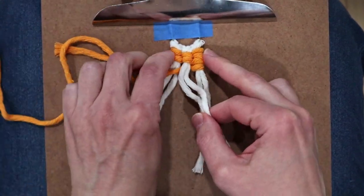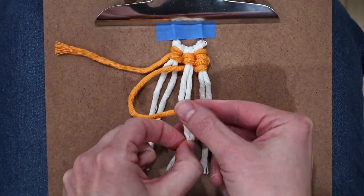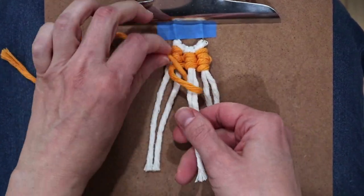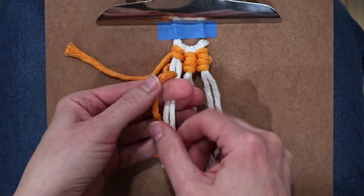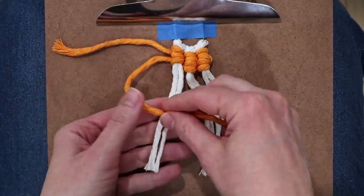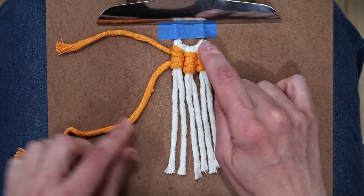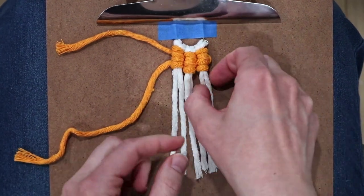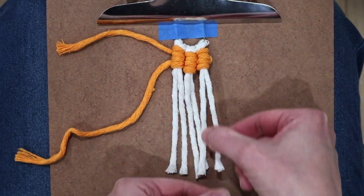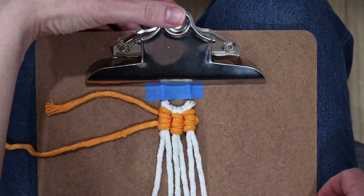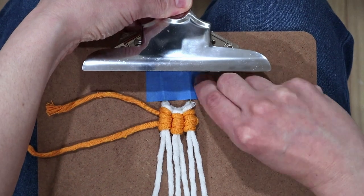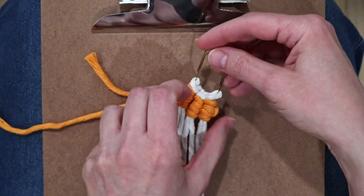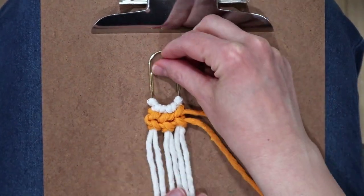Now simply continue creating two more sets of double half hitch knots to complete your row. Your pattern and positioning should be something similar to mine, which is a bit of a u-shape to match that paper clip. If not, you can always tighten and tuck in the ends. Now you can remove the tape from the paper clip and then turn the paper clip over because we're going to be weaving in those long colored cords.